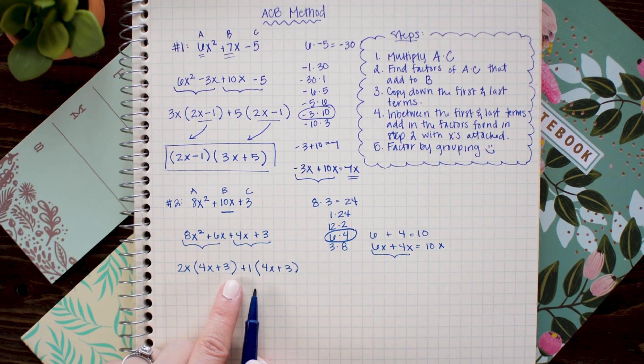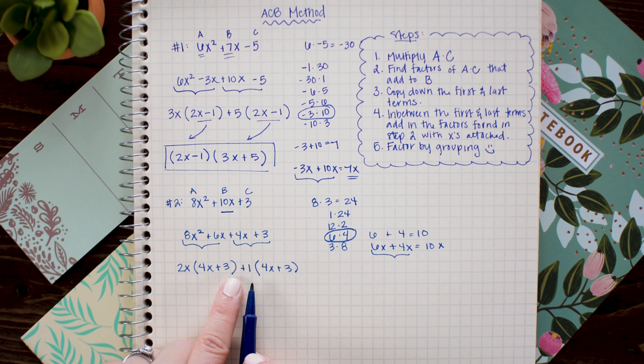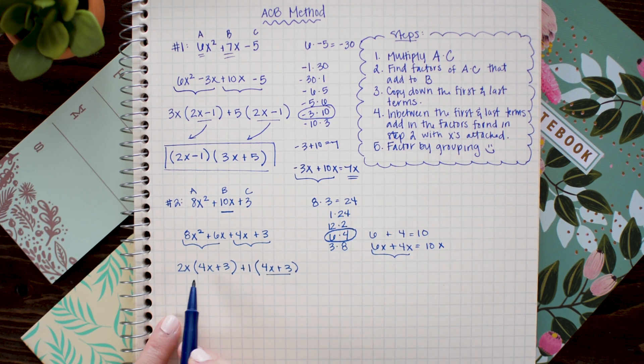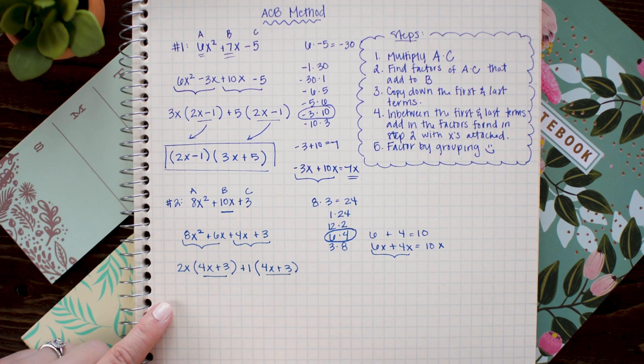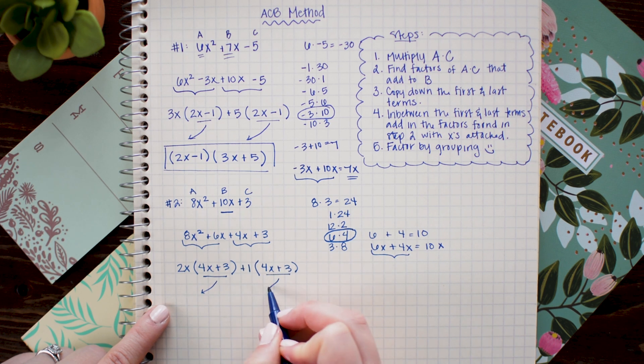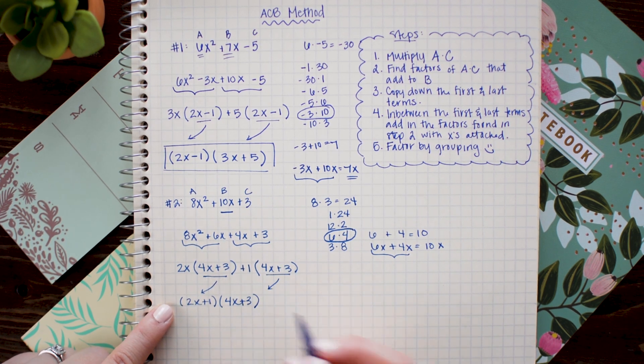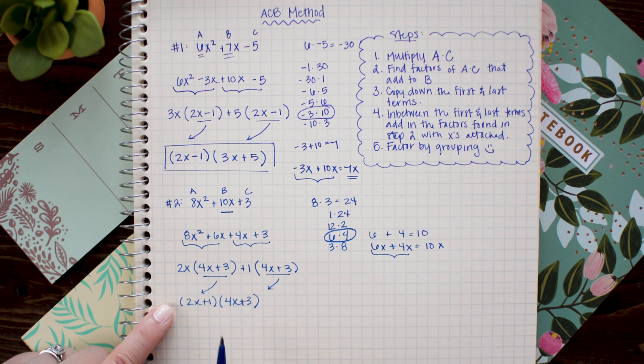Now we'll factor those guys out. 2x plus 1 times 4x plus 3.